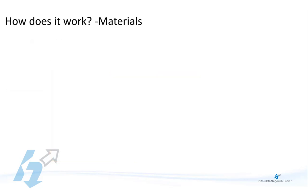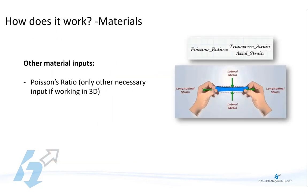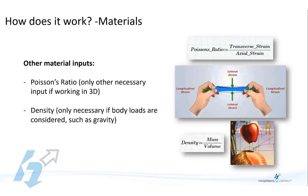If you're working in 3D — and you probably are — you'll also need Poisson's ratio. This just describes, for instance, how much my material sample shrinks laterally as I stretch it axially. These two properties — elastic modulus and Poisson's ratio — are the only required properties to solve a basic stress analysis in Inventor. You may need density if you want to consider body loads like gravity. The material library contained in Inventor already contains all this information.